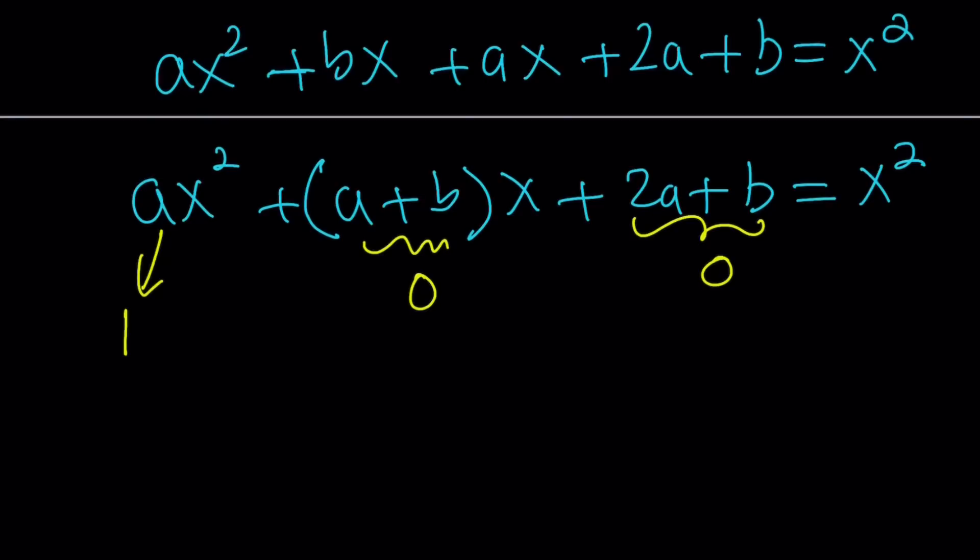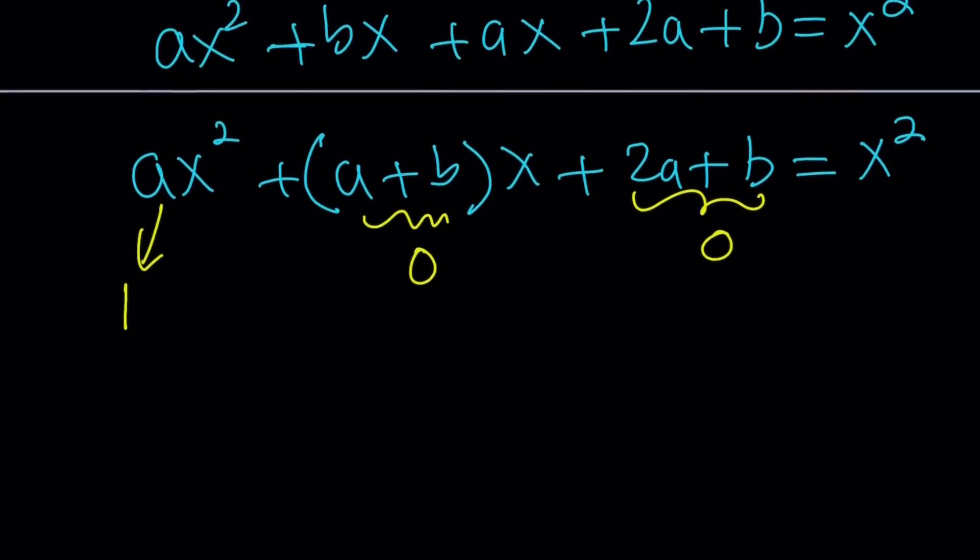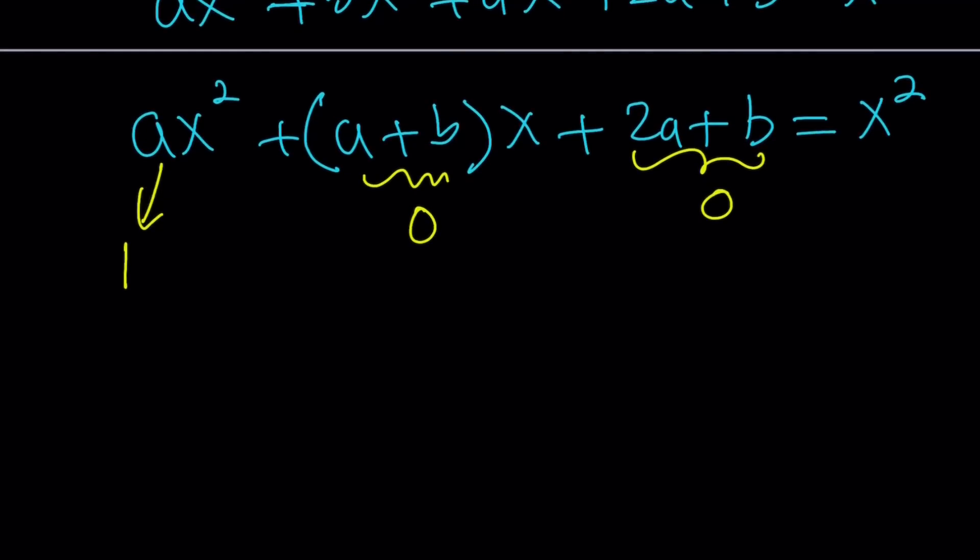Let's see if this is going to be consistent, because we have a system of three equations in two variables. So that could be problematic, right? Obviously, if a is 1 and a plus b is 0, that indicates b equals negative 1. But then 2a plus b is going to be 2 minus 1, and that's not equal to 0.